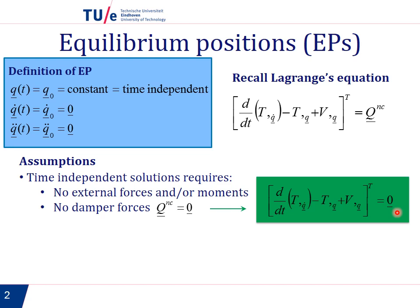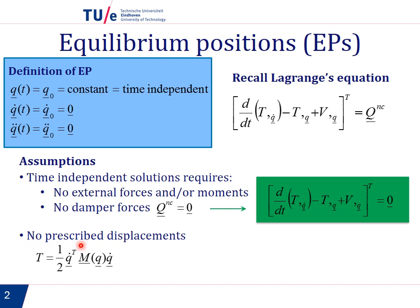The second assumption is that we have no prescribed displacements, which means that the kinetic energy can be written as one half of q̇ transpose times the mass matrix — which can be q-dependent — times q̇. So now we will look into the terms which depend on the kinetic energy.